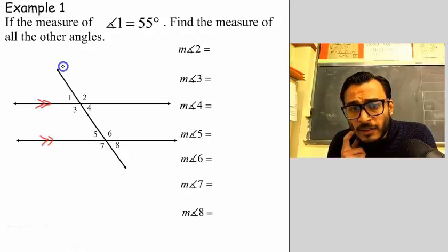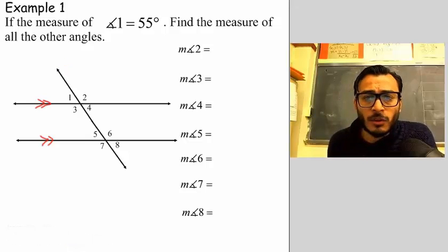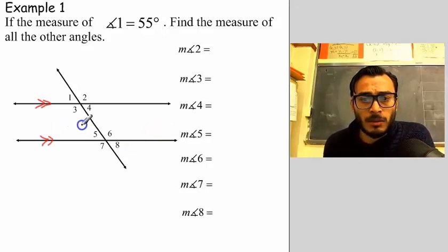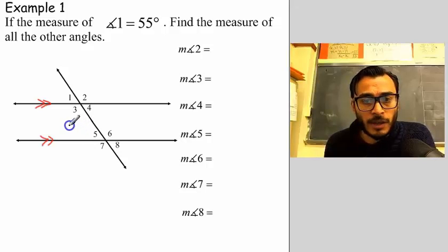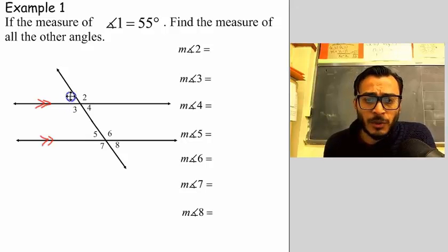So it says that if the measure of angle one is 55 degrees, find the measure of all the other angles. This should not be so difficult — at least half of it we should know, because we've already looked at vertical and supplementary angles.